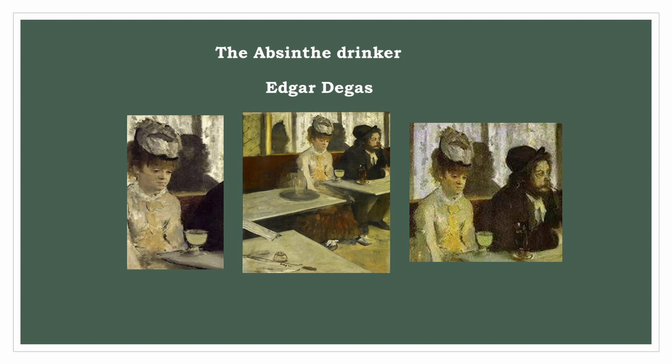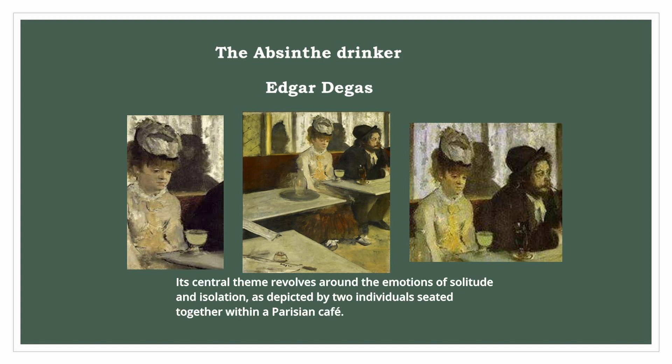Edgar Degas's 'The Absinthe Drinker' was made in 1876 and is located at the Orsay Museum in Paris. Its central theme revolves around the emotions of solitude and isolation, as depicted by two individuals seated together within a Parisian café.